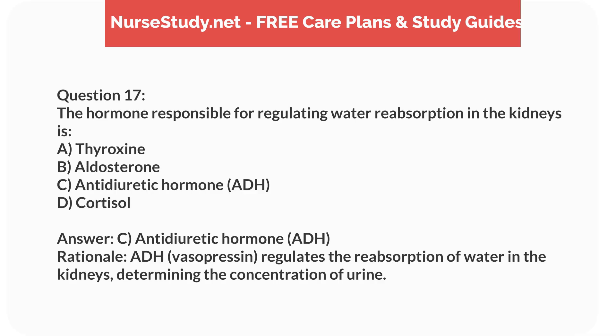Answer: C. Antidiuretic hormone (ADH). Rationale: ADH (vasopressin) regulates the reabsorption of water in the kidneys, determining the concentration of urine.